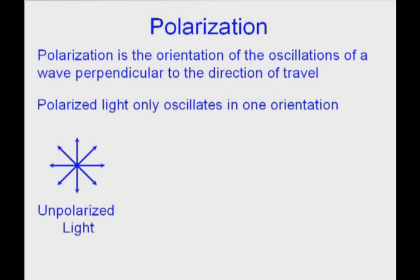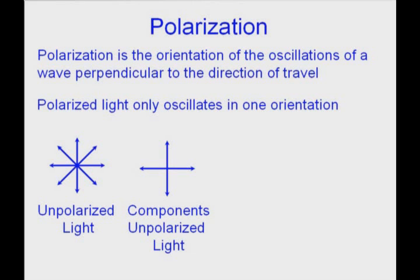Polarization is the orientation of the oscillations. It just means what direction is it vibrating in. And we can polarize the light to make it vibrate in just one direction. Now it turns out these other directions that are not in the x and y direction can be represented with x and y components.